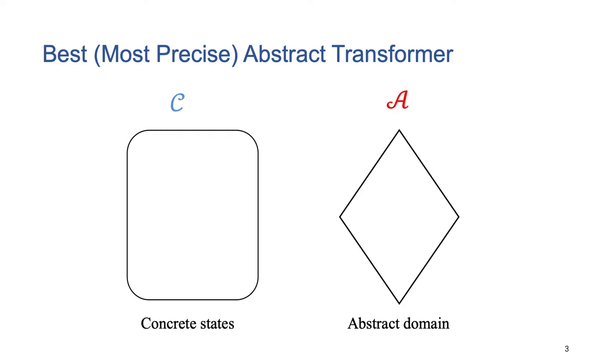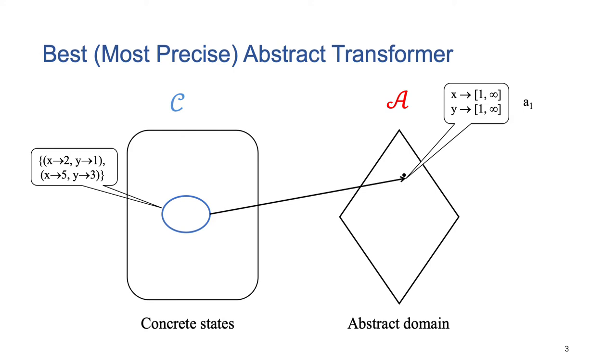Abstract interpretation links a concrete domain of states with an abstract domain. For example, the interval domain tracks the value range information of variables. Suppose we have two concrete states. One of its over-approximations could be A1, which is a bit imprecise. In comparison, the other over-approximation A2 is more precise.